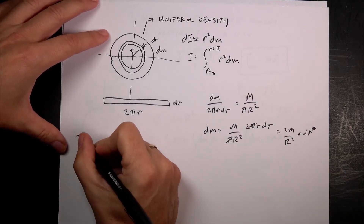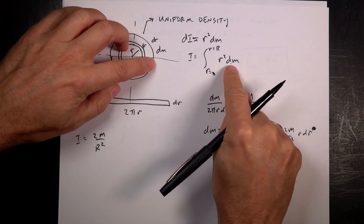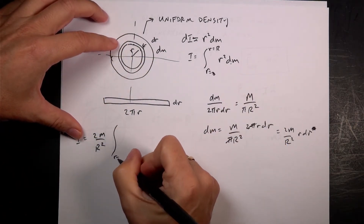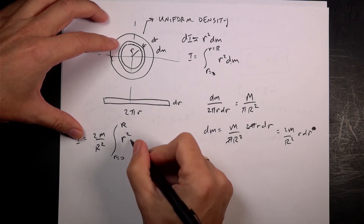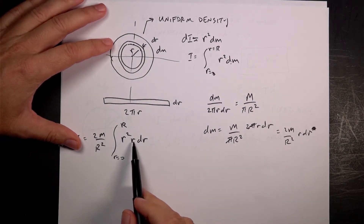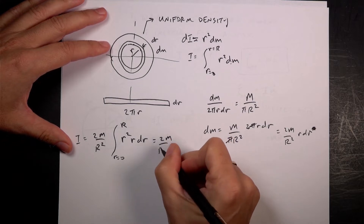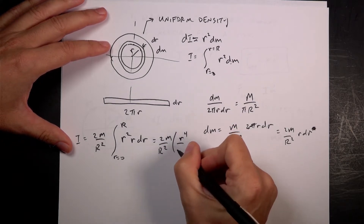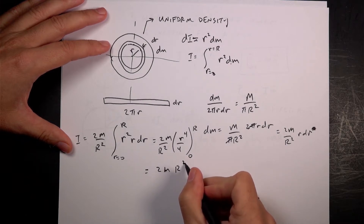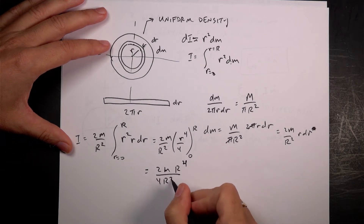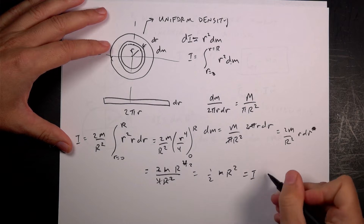Plugging that in: I equals the integral, factoring out constants 2M over R², times the integral from r equals 0 to R of r²·r·dr, which is r³. Integrating r³ gives r⁴ over 4. So this equals 2M over R² times R⁴ over 4. The R²'s cancel and the 2 and 4 reduce: I-disk equals ½MR².